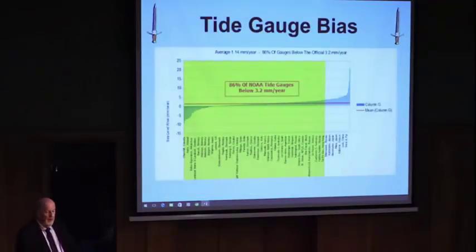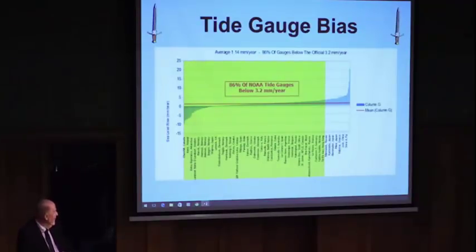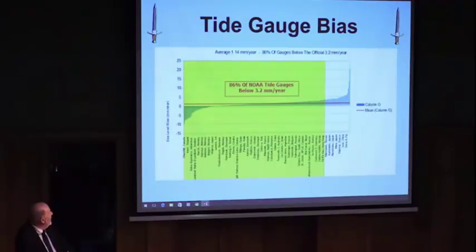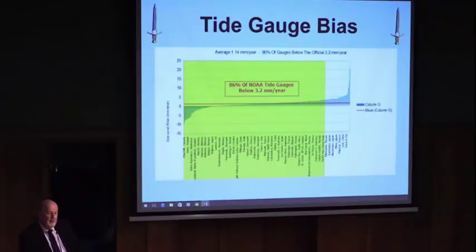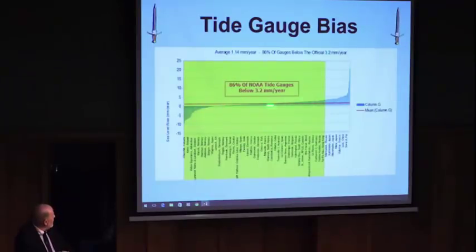I borrowed this slide from Nils — thank you, Nicholas. This is a bias in tide gauges. First of all, that 3.3 millimeter figure that NOAA says — most of the tide gauges are below it. This is worldwide.